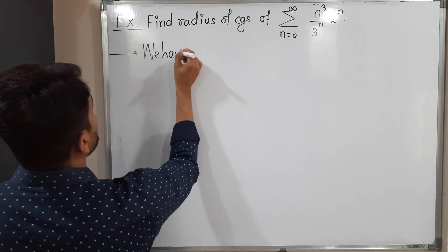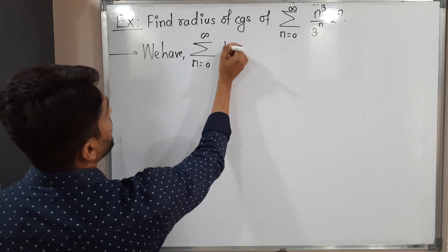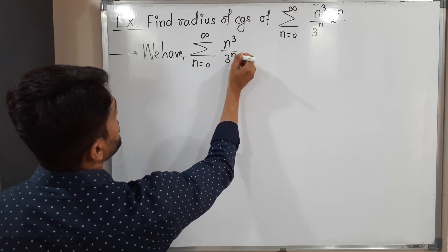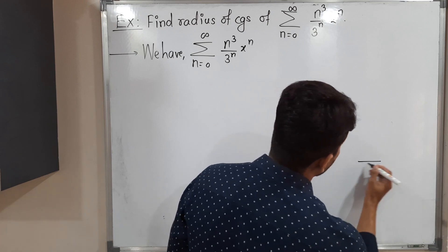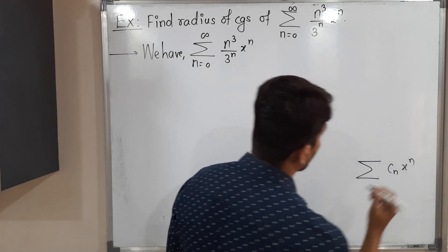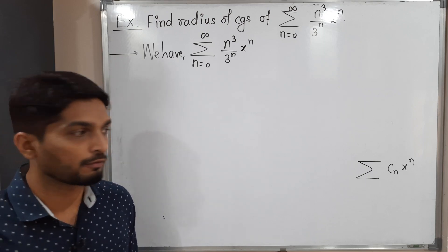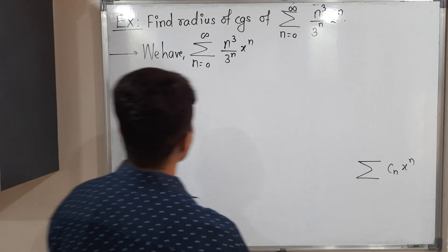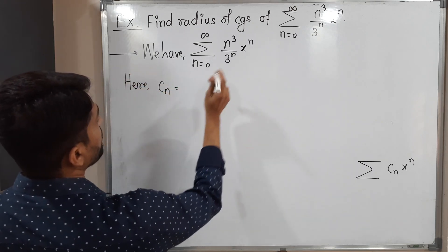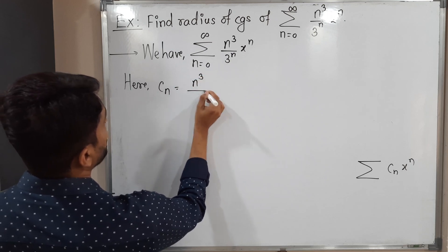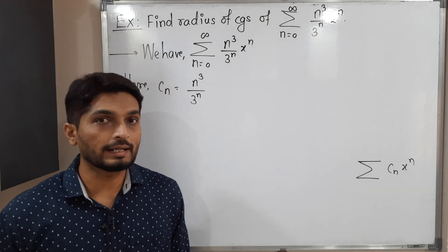Our first power series is summation n running from 0 to infinity of n³ divided by 3ⁿ times xⁿ. The standard form of a power series is summation cₙ xⁿ, where cₙ is called the coefficient or multiple of xⁿ. So here cₙ equals n³ divided by 3ⁿ, and with the help of that we have to find the radius of convergence.